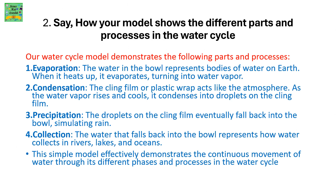Say how your model shows the different parts and processes in the water cycle. Our water cycle model demonstrates the following: Evaporation — the water in the bowl represents water bodies on earth such as lakes, rivers, oceans or seas; when this water heats up, it evaporates turning into water vapour. Condensation — the cling film or plastic wrap acts like the atmosphere; as the water vapour rises and cools down, it condenses into droplets on the cling film. Precipitation — the droplets on the cling film eventually fall back into the bowl, acting as rain. Collection — the water that falls back into the bowl represents how water collects in rivers, lakes and oceans.